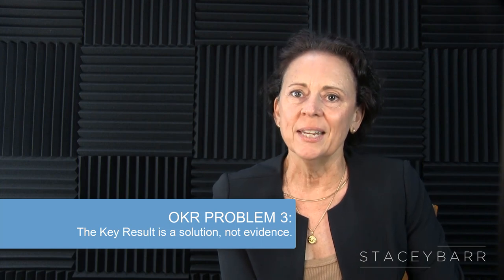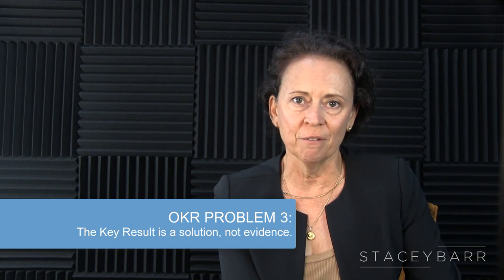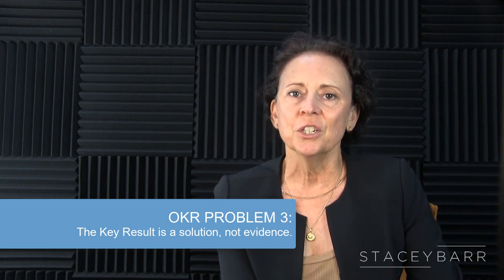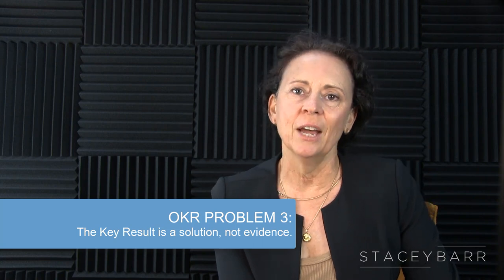Problem three is when the key result is a solution and not evidence. The vast majority of key results I've read describe how to achieve the objective rather than how to know if the objective is achieved — actions and milestones, not performance measures. Actions and milestones help in project management to set progress goals, but they are not evidence of results. Instead, make OKRs measurable by aiming for proper performance measures that are evidence of the objective.